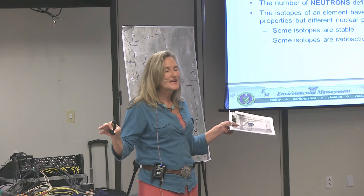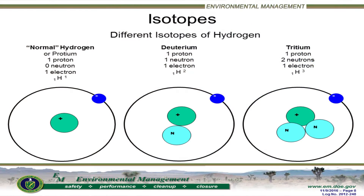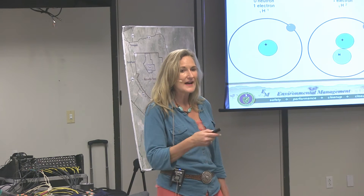Isotopes of an element all have the same chemical properties — you can't distinguish them. For example, this is hydrogen. As members of this board, you'll sometimes have presentations on our underground test area, and the isotope of concern is tritium. Tritium is an isotope of the element hydrogen. Normal hydrogen has one proton and one electron. All hydrogen isotopes have the same number of protons — that's what makes them the same element. But the number of neutrons differs: with one neutron it's called deuterium, and with two neutrons it's called tritium. Tritium is therefore an isotope of hydrogen, differing only in its number of neutrons.